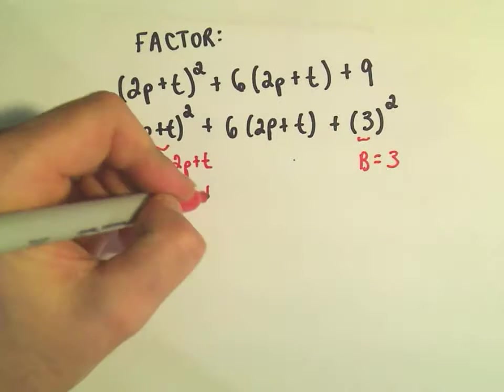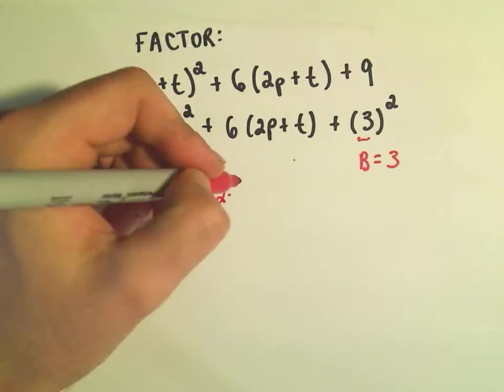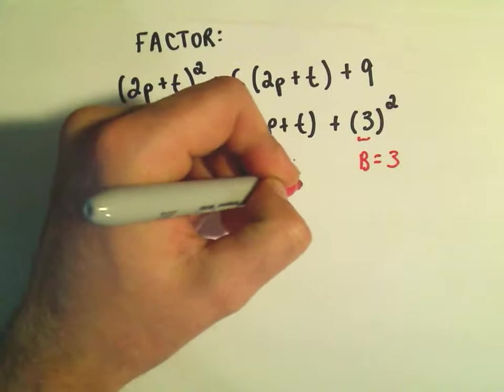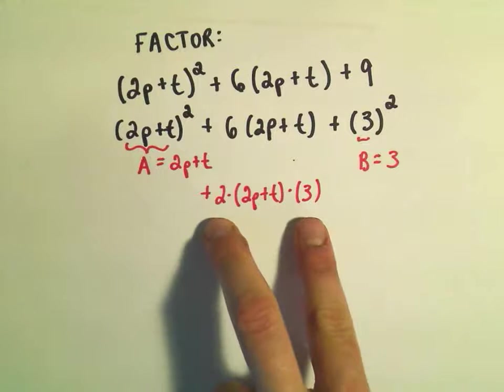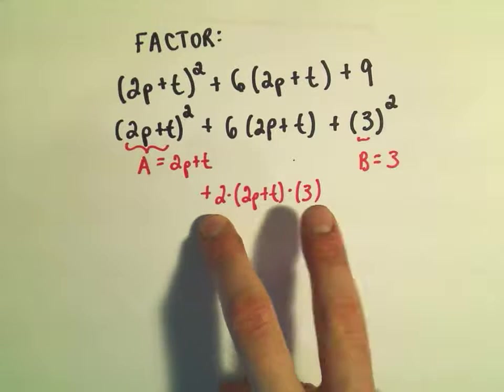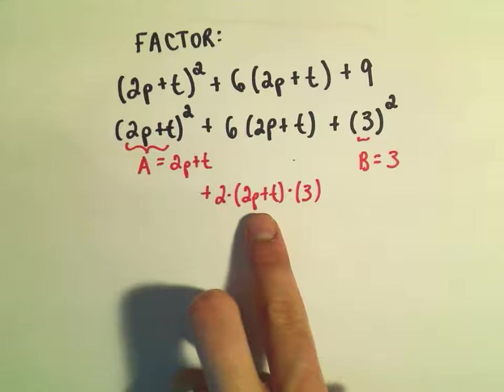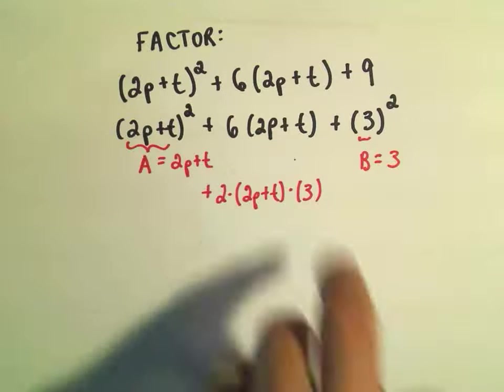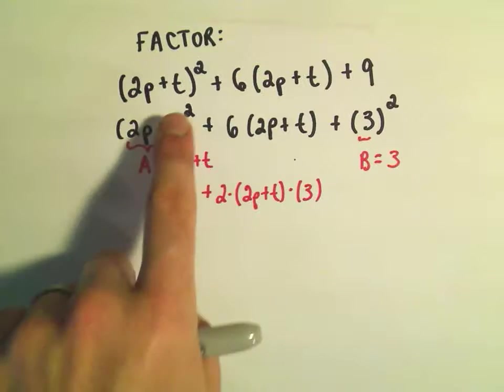And notice it says in the middle we take 2 times a, which is 2p plus t, times b, which is 3. Notice if you multiply all those together, 2 times 3 is 6, and then we'll get our 2p plus t. We do get this middle term back, so to me it says we do have this form,